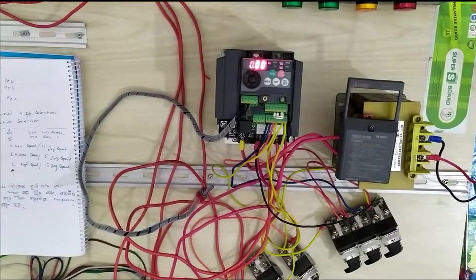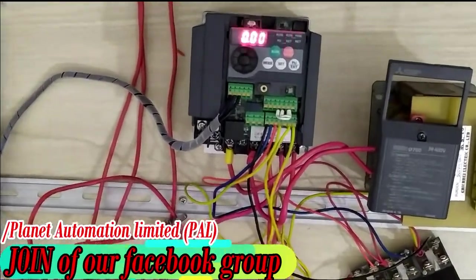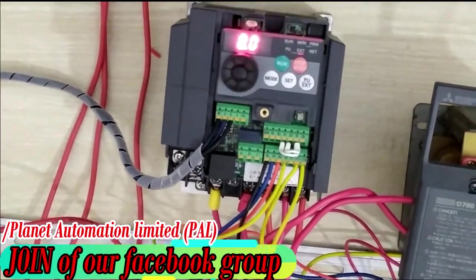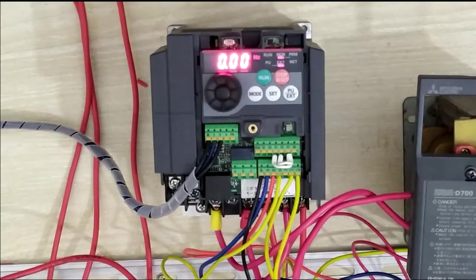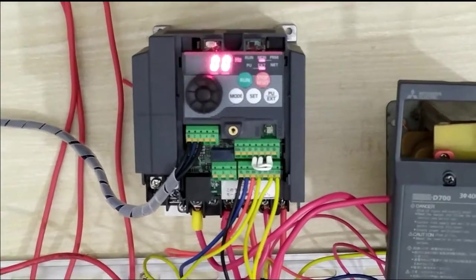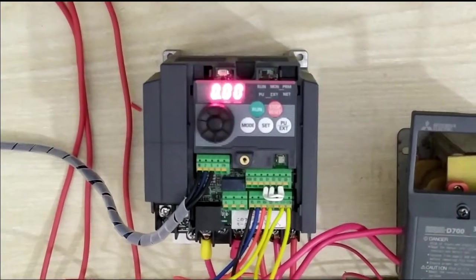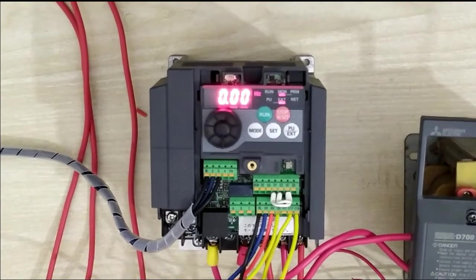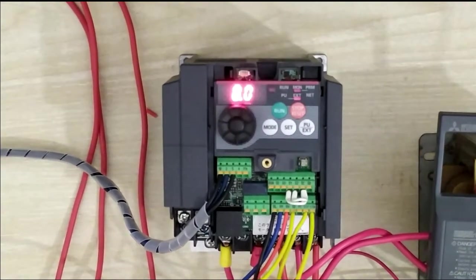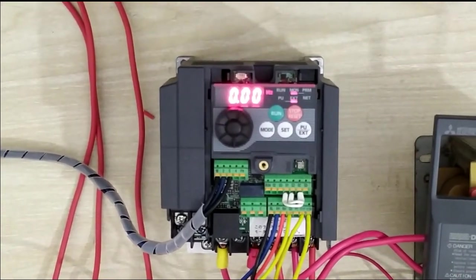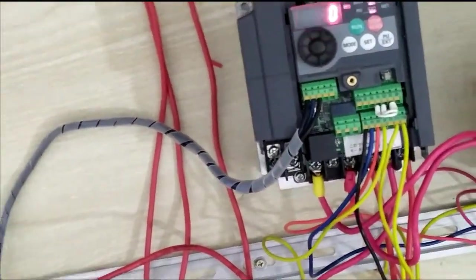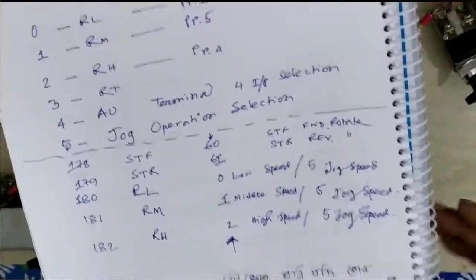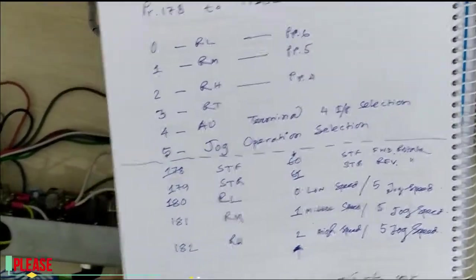I'm going to show you how to control your VFD by jog mode. Jog frequency means a fixed frequency which your load is running at. For example, if you set your jog frequency at 20 Hertz, it will directly run your motor at 20 Hertz. Now let me show you how to set your motor in jog mode.